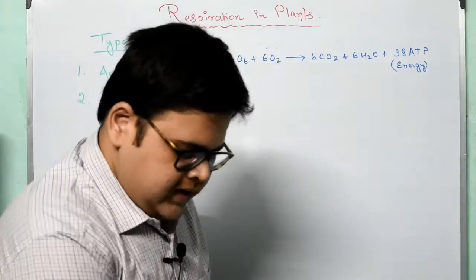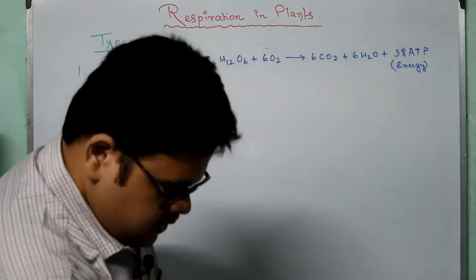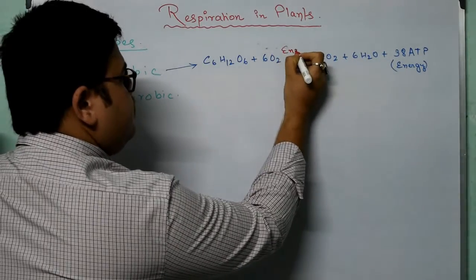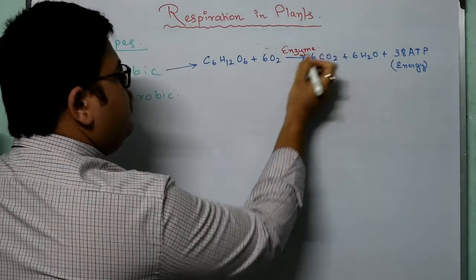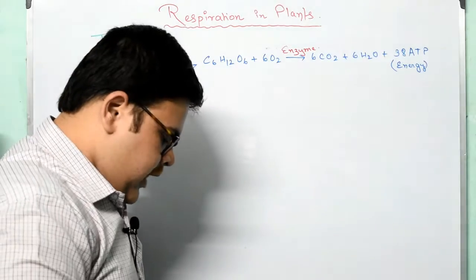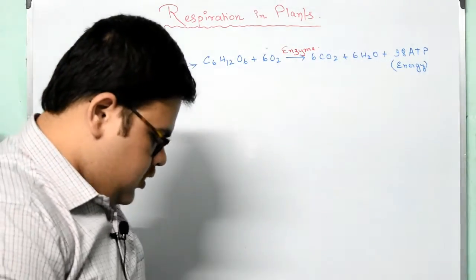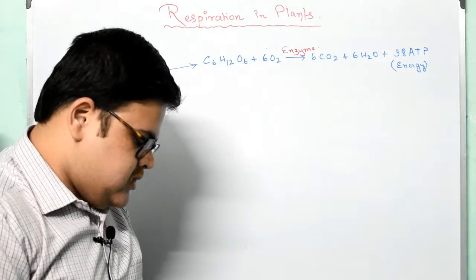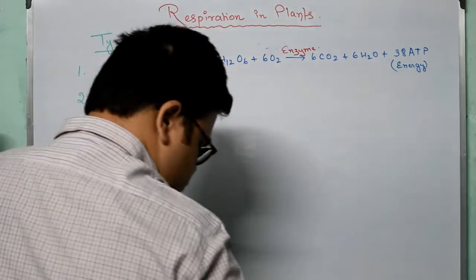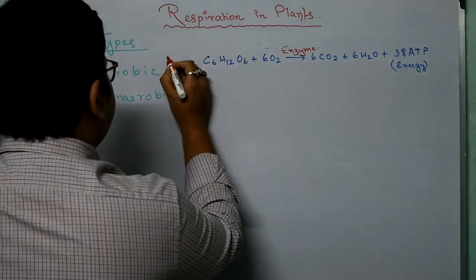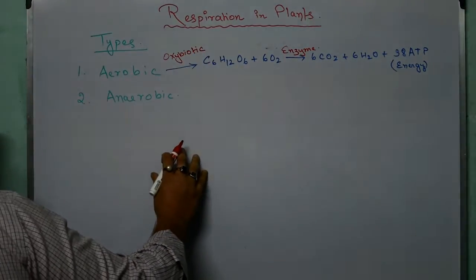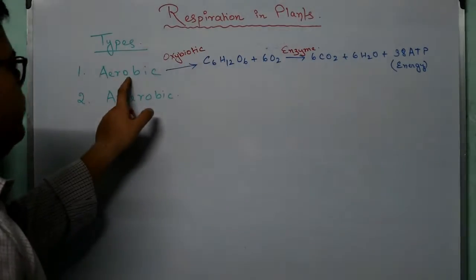One more important thing: aerobic respiration occurs with the help of particular enzymes. Enzymes convert glucose to the end products. Respiration proceeds only when oxygen, a constituent of air, is available, and is therefore called aerobic respiration. It is also known as oxybiotic respiration.